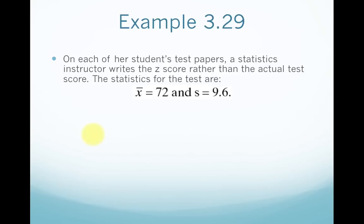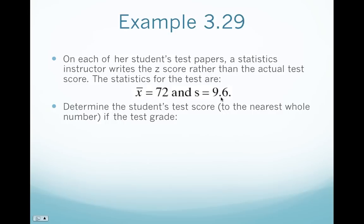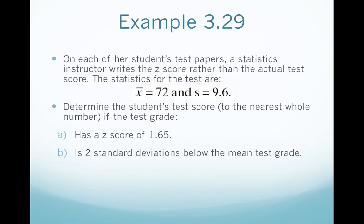On this exam, the sample mean is 72 and the sample standard deviation is 9.6. Determine the student's test score — that's x, the raw score, the data value — rounded to the nearest whole number: if the test grade has a z-score of 1.65. Then the same concept is applied where the problem states the test grade is two standard deviations below the mean. And part c has a z-score of 0.